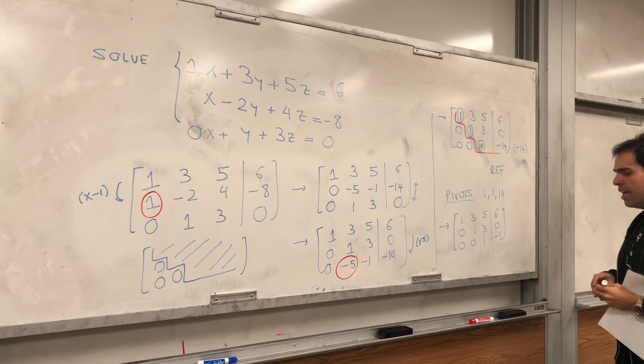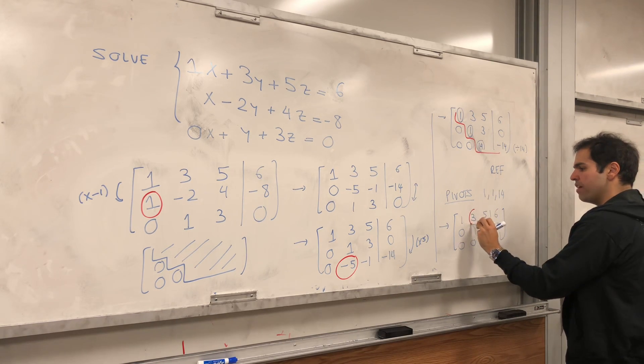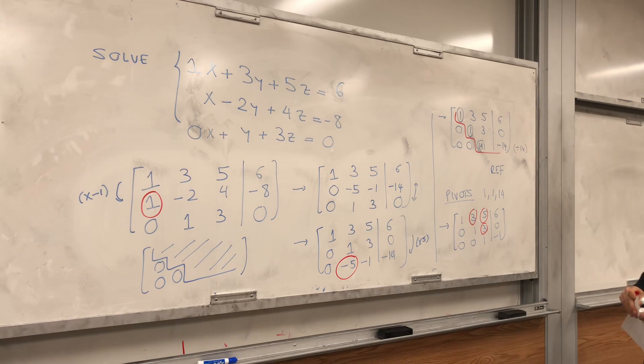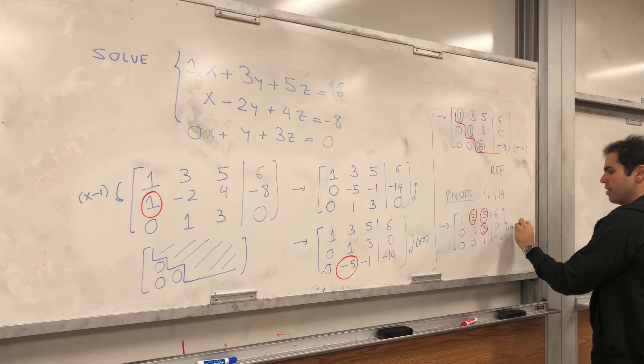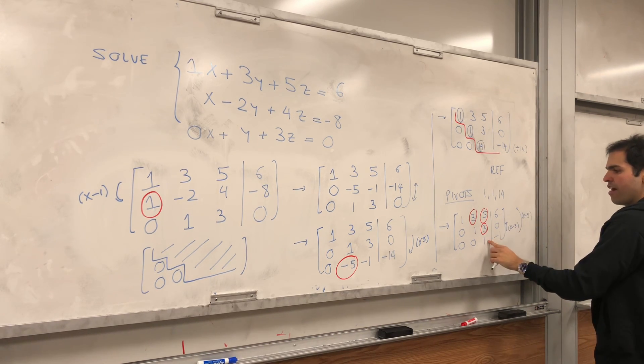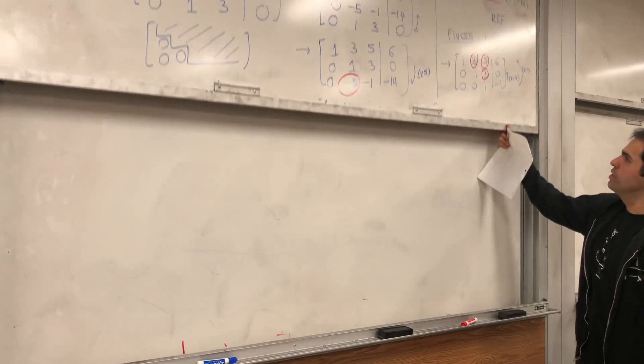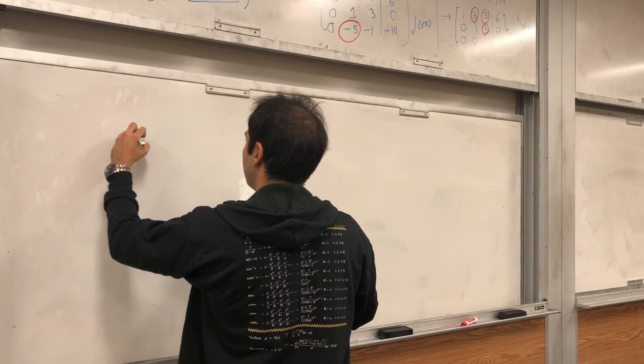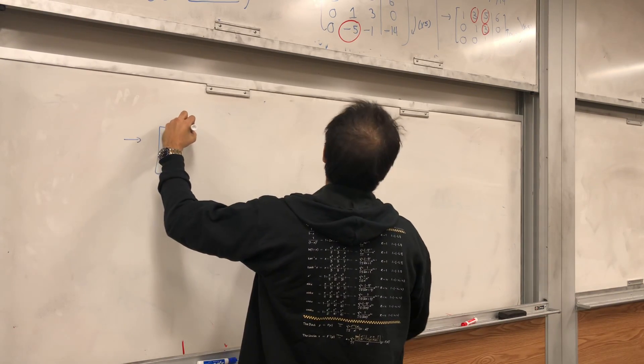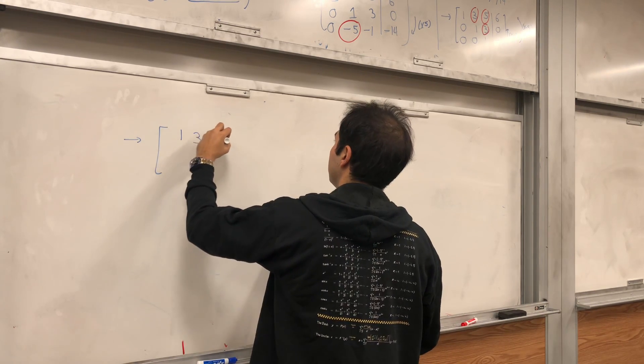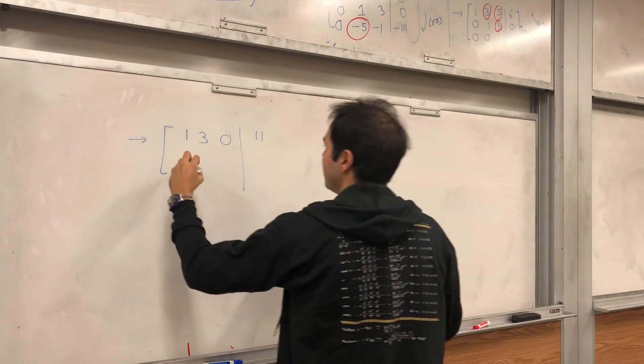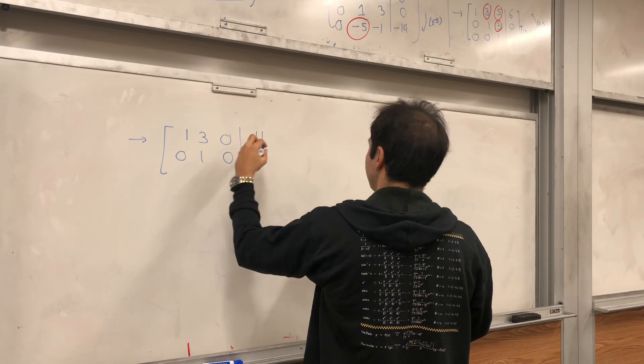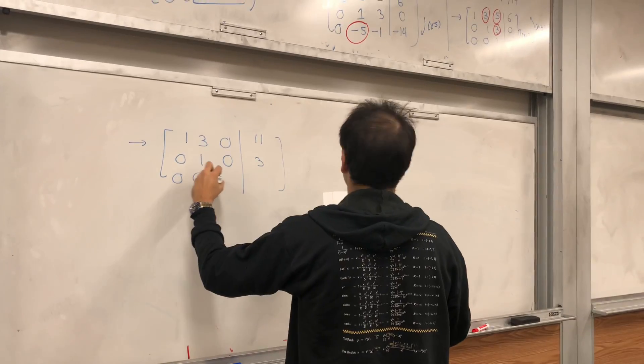And then the next requirement is simply everything above and below the pivot has to be 0. So let's try our best to turn this into 0, this into 0, and this into 0. Well, one thing we can do, we can subtract 3 times this row from this row. And we can subtract 5 times this row from this row. And then what do we get? Let's see. So 1, 3, 0. And then 6, minus 1 times minus 5, which is 11. And then 0, 1, 0. And then minus 3 times minus 1, which is 3. And then 0, 0, 1, minus 1. So that's good.